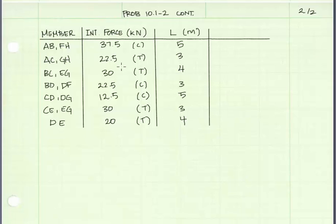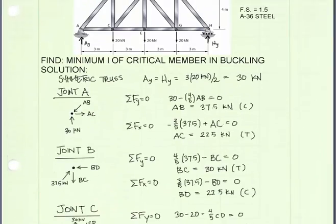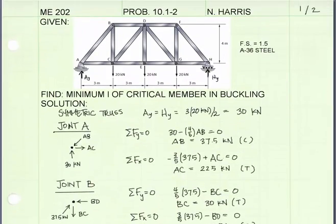It turns out for our truss that members AB and FH have both the largest internal force and the longest length. Let's look back at which members this is. That's this member here, member AB and member FH.